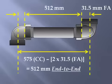To put it another way, a 512 millimeter end-to-end piece of inch-and-a-half pipe with two inch-and-a-half 90s threaded on to either end would create a center-to-center run of 575 millimeters.